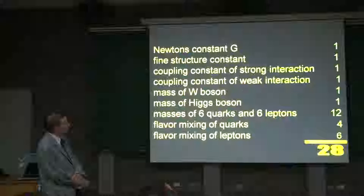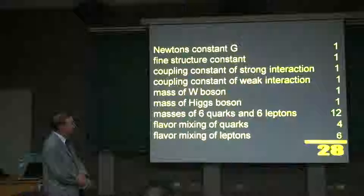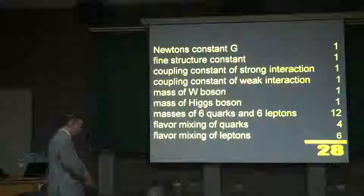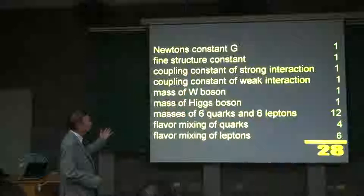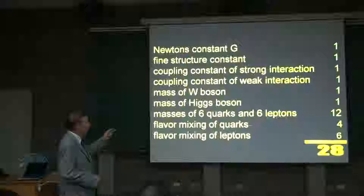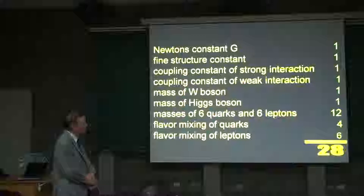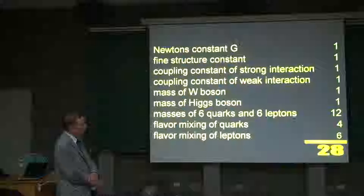Then there is the mass of the weak boson and the mass of the Higgs boson. There are 6 quarks and 6 leptons, each of them having a mass — so 12 masses. There is a phenomenon for the quarks called flavor mixing, related to beta decay, where transitions between quarks involve mixtures of mass eigenstates. It's described by 3 mixing angles and 1 phase parameter, so 4 parameters.